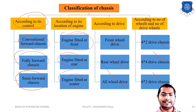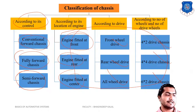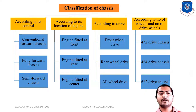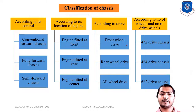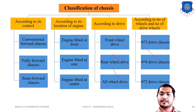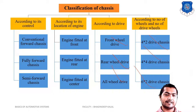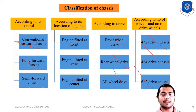These nine types of chassis were already discussed in previous lectures, including front engine, front wheel drive, rear wheel drive, and all wheel drive. Now the remaining three — conventional forward chassis, fully forward chassis, and semi-forward chassis — will be studied in the next slides.